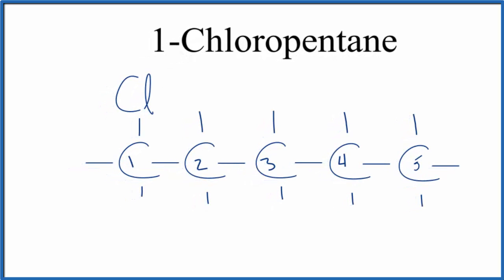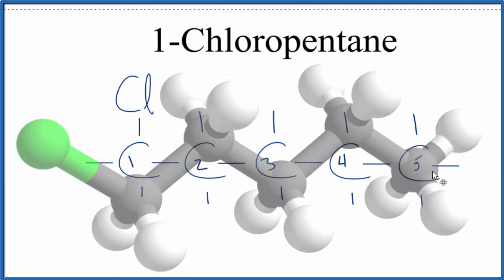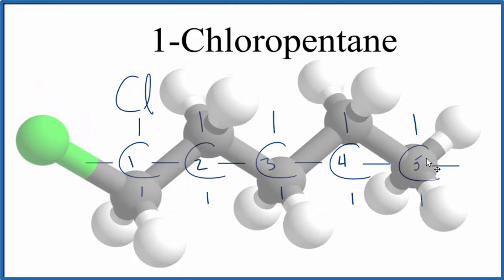If we wanted to look at the molecular model for 1-chloropentane, that would look like this here. So the grays or the blacks, those are the carbons, the whites are the hydrogens, and the green is the chlorine.